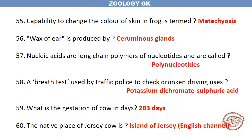The capability to change the colour of skin in frogs is termed Metachrosis. Wax of the ear is produced by ceruminous glands. Nucleic acids are long-chain polymers of nucleotides and are called polynucleotides.